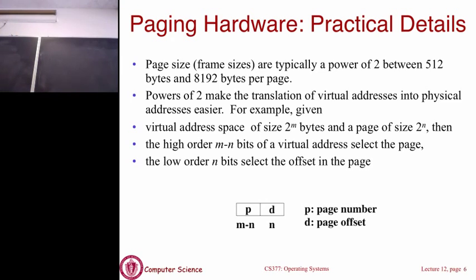For example, with a 4-bit virtual address where the first two bits are the page number and the last two bits are the offset: if I have virtual address 1-1-0-1 (which is 13), the page number is 1-1 binary, which is 3, and the offset is 0-1, which is just 1. So the page number is 3 and the offset is 1.